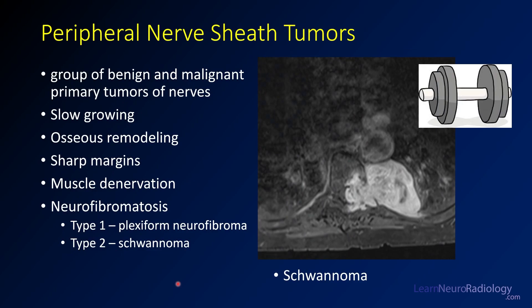Peripheral nerve sheath tumors — we use this term generically, thinking about benign and malignant primary nerve tumors. These tend to be slow-growing tumors that cause osseous remodeling. A lot of times they're centered in the neural foramen, have sharp margins, and can cause de-innervation changes in the muscles. They're often associated with neurofibromatosis. This is a case of a schwannoma — an enhancing mass on a post-contrast image centered in the neural foramen, with a component in the spinal canal, an extra-spinal component, and some erosions of the surrounding bone.